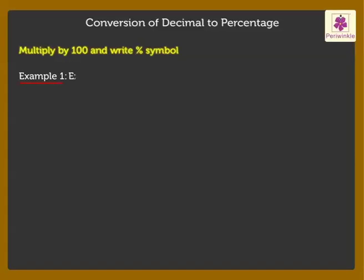Let's express 7.7 as a percentage. Thus, we get 7.7 into 100% is equal to 770%. Here, we moved the decimal point two places to the right as we multiplied it by 100.